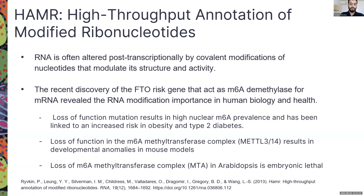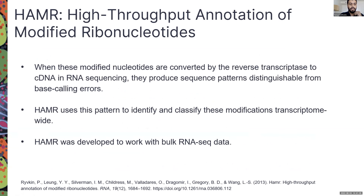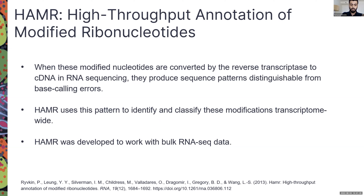RNA modifications are also tied to developmental anomalies in mouse models and are embryonic lethal in arabidopsis. When these modified nucleotides are converted by reverse transcriptase to cDNA in RNA sequencing, they produce specific sequence patterns that are distinguishable from simple base-calling errors. HAMR uses these sequencing patterns to identify and classify modifications transcriptome-wide.